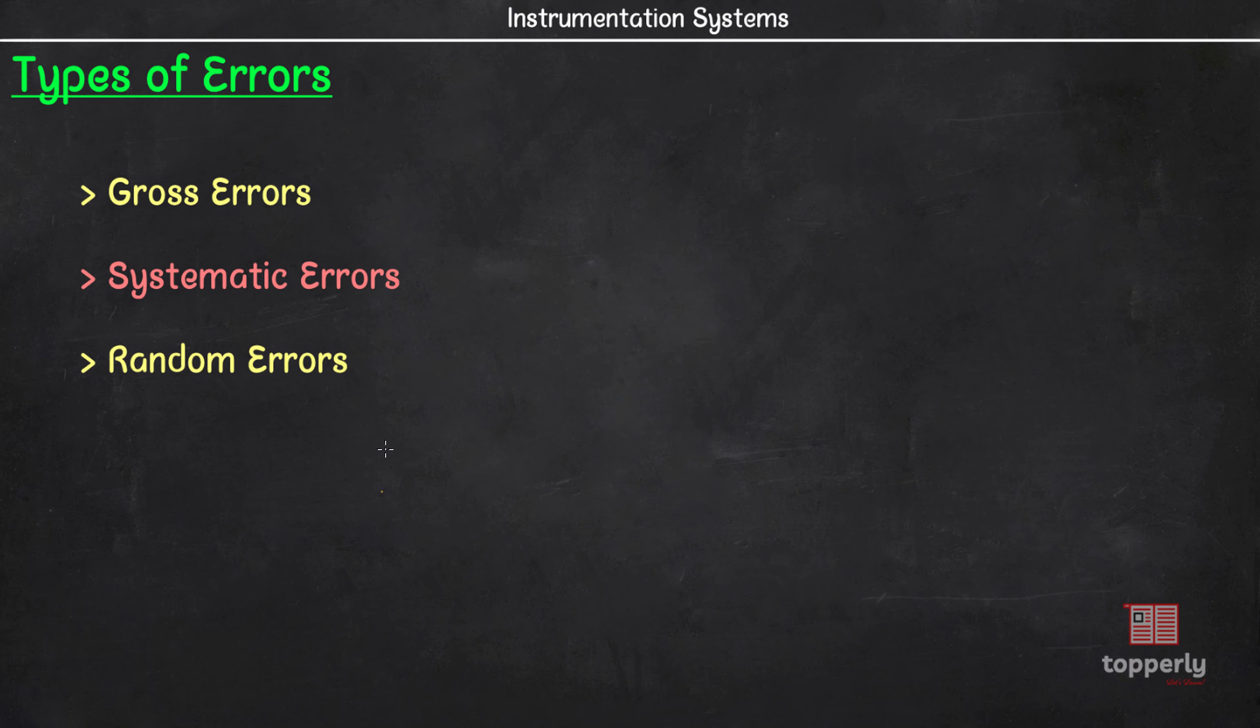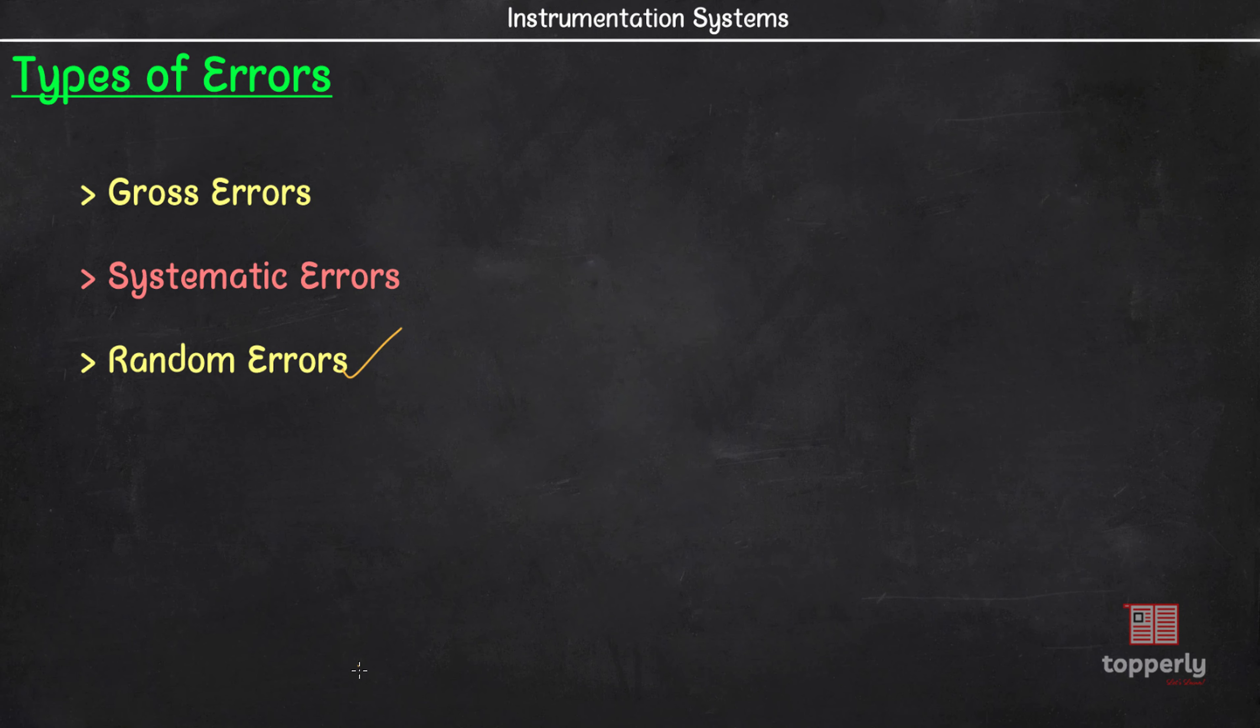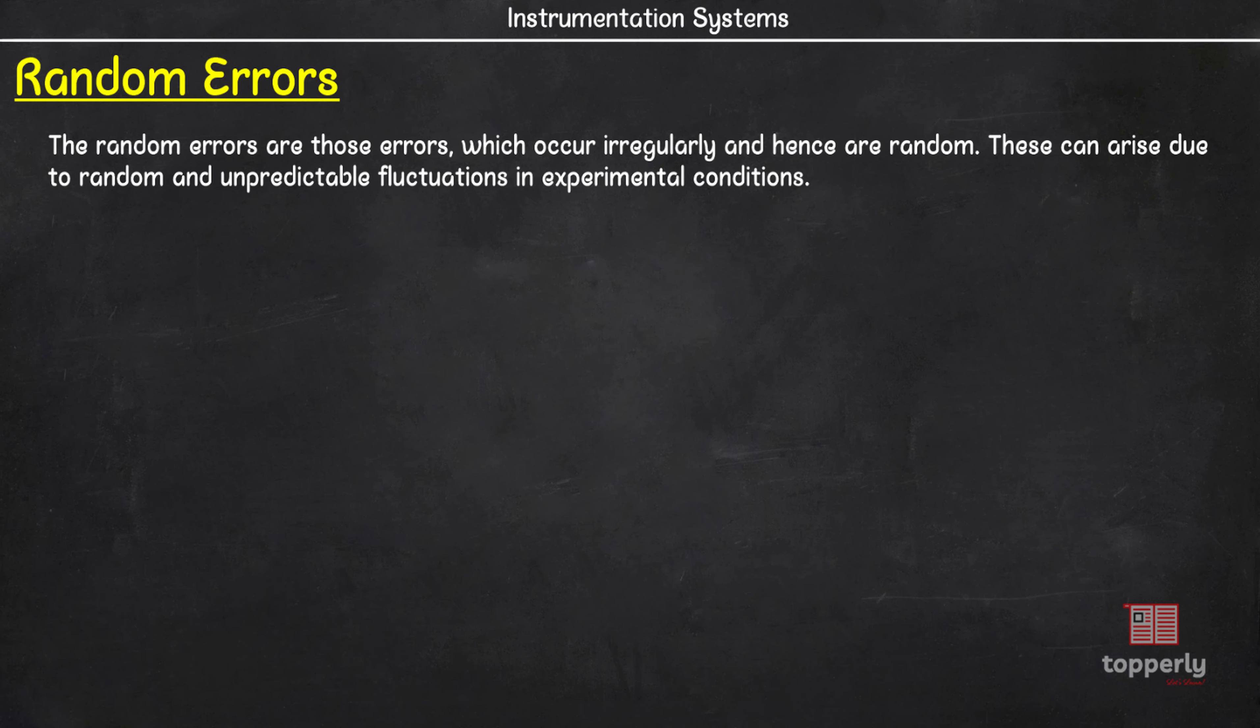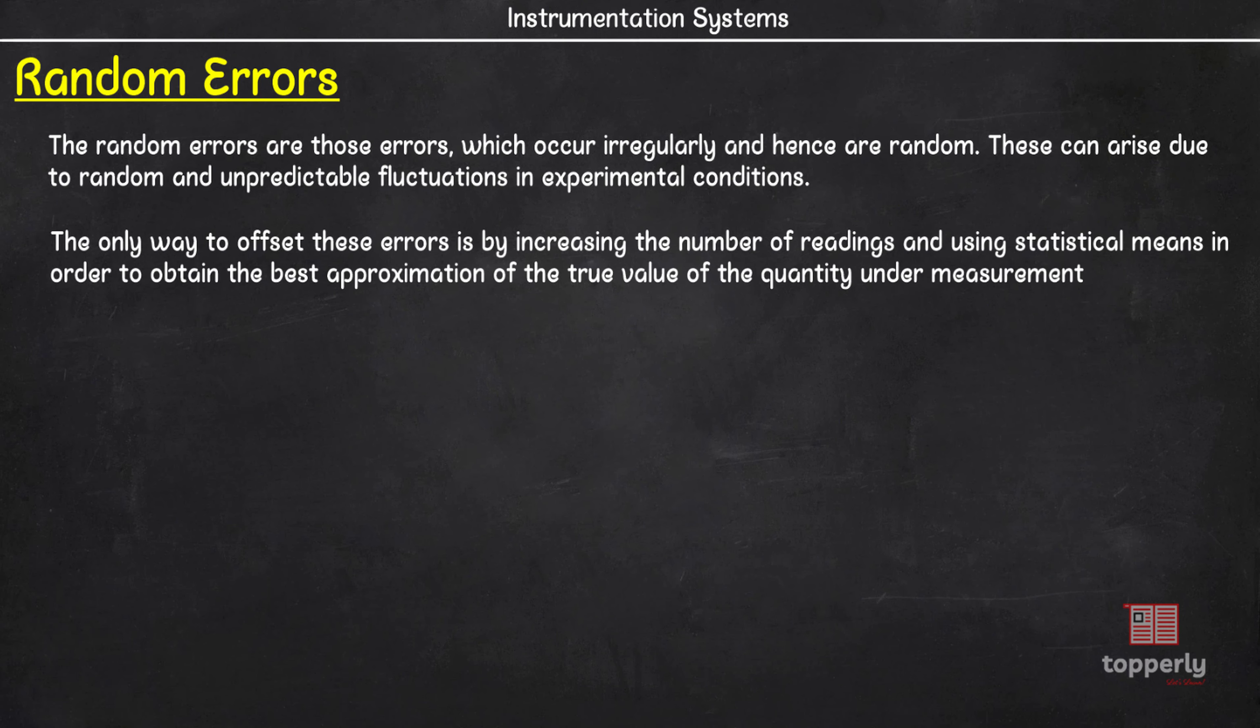Now the last type of error is random error. These are errors due to unknown causes even when all systematic errors have been accounted for. These errors cannot be corrected by any calibration. The only way to offset these errors is by increasing the number of readings and using statistical methods to approximate the true value. Now we also have a category called known errors, but many textbooks argue that it comes under systematic errors. Anyways, known errors are errors which we are sure that the instrument possesses.